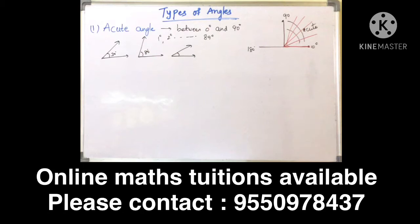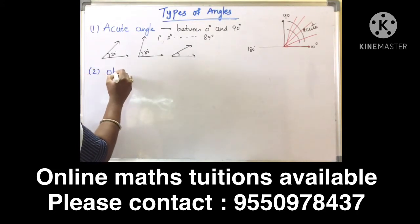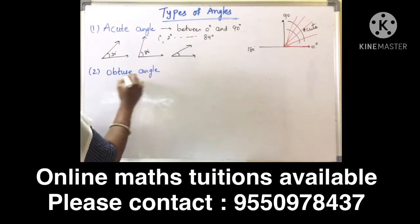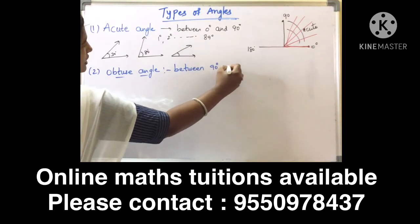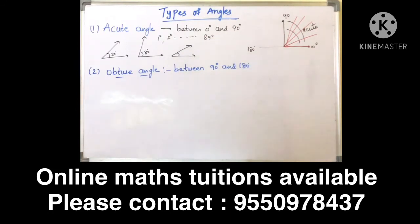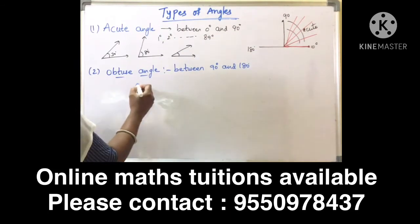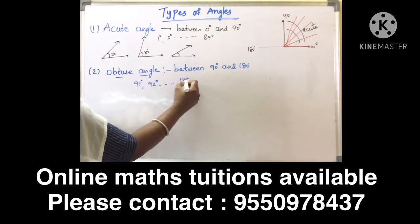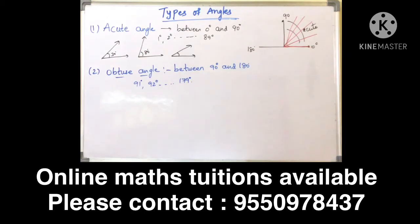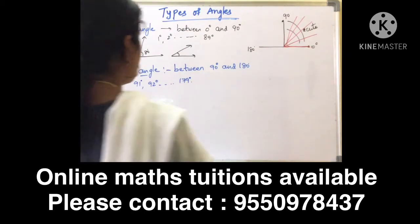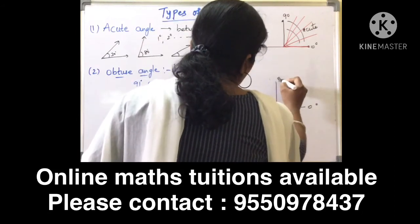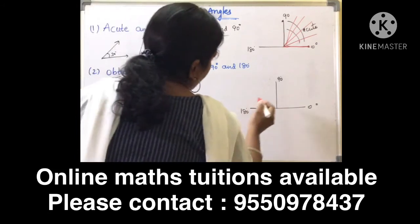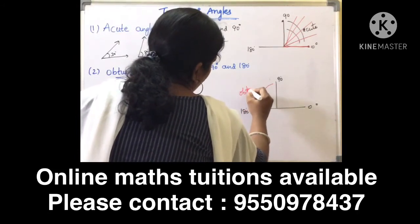Next is obtuse angle. An angle whose measure lies between 90 degrees and 180 degrees — meaning 91 to 179 degrees — is called an obtuse angle. On the protractor, between 90 and 180 is the obtuse angle region.